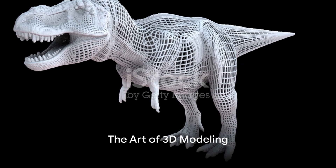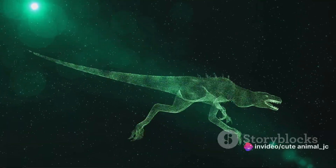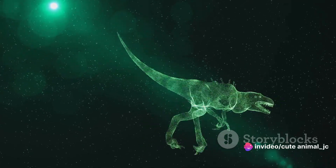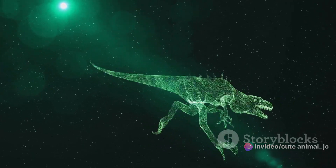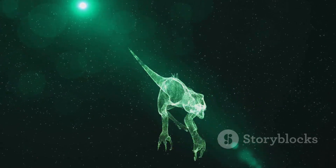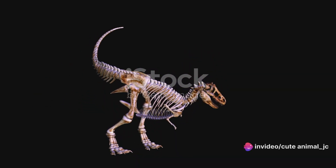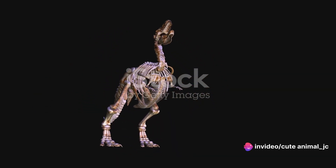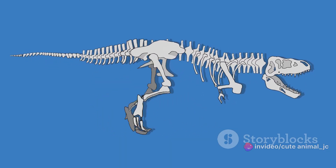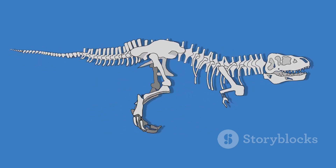Creating a 3D model of a dinosaur is no easy task, but it's certainly a fascinating one. Our journey begins with the formation of a basic skeleton, a wire-frame structure that serves as the foundation of our Carnotaurus. Imagine it as the steel framework of a skyscraper, providing strength and stability to the design. Next, we layer on muscles, sculpting each sinew and tendon to give our dinosaur its unique shape and form. This is where the magic starts to happen, as our skeletal structure begins to resemble the formidable predator we're recreating.